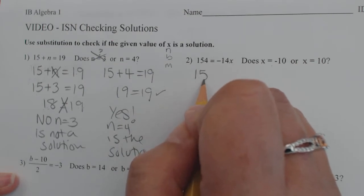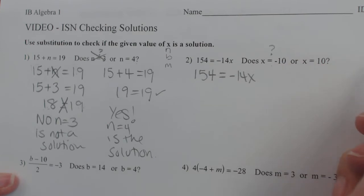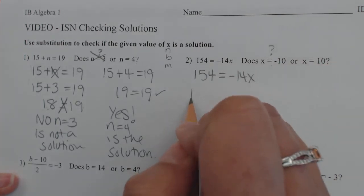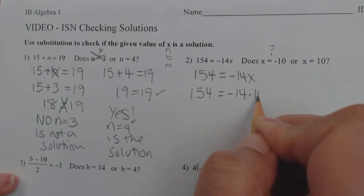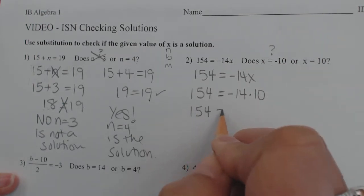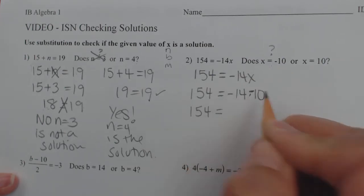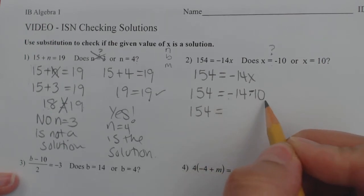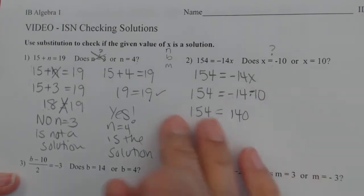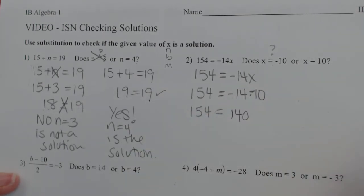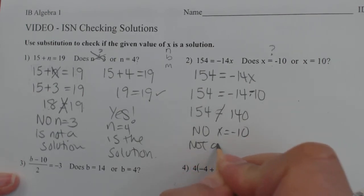So number 2, 154 equals negative 14x. Let's try. Does x equal negative 10? 154 equals negative 14 times negative 10. Look at that, I forgot that negative, so let's put it in there. So negative 14 times negative 10 is a positive 140. So does 154 equal 140? No. So no, x equals negative 10, not a solution.